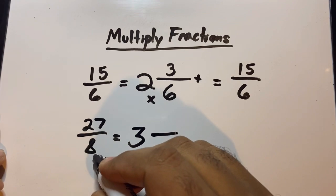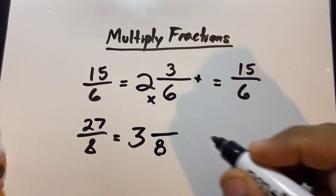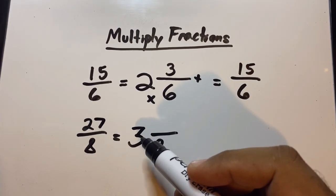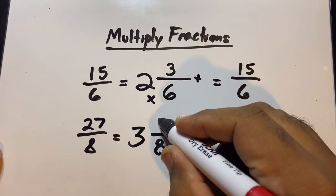The 8 doesn't change. The bottom number never changes when you're converting it, so this will also be an 8. Now we're gonna figure out what goes on top. 3 times 8 is 24. 27 minus 24 is 3.